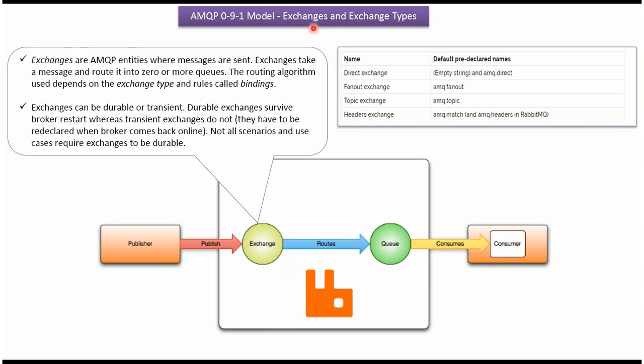In this video tutorial I will explain Exchanges and Exchange Types of the AMQP Model. Here you can see the Publisher, which creates the message and sends it to the Exchange. The Exchange receives the message and routes it to the queues.